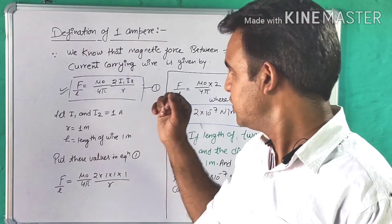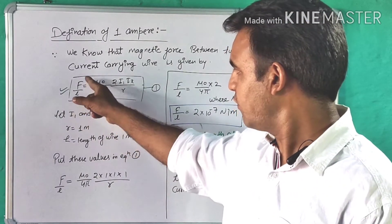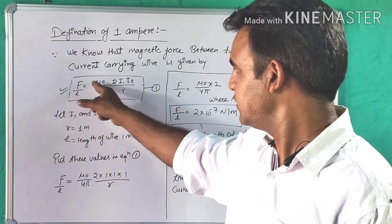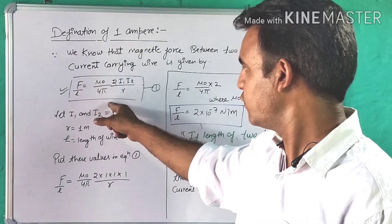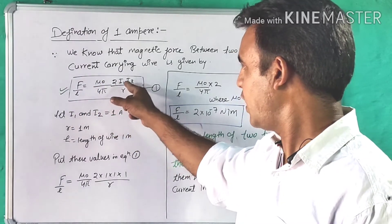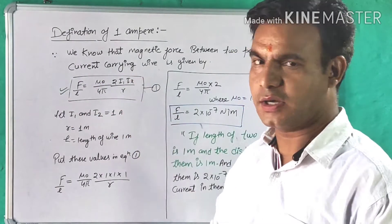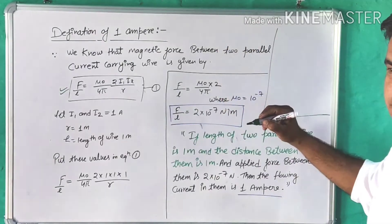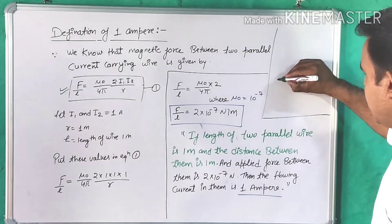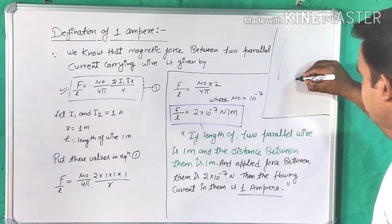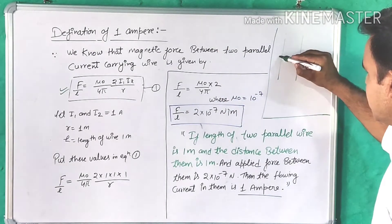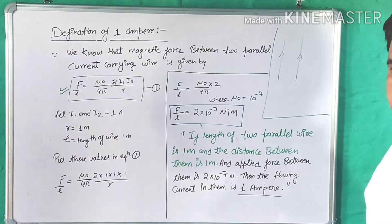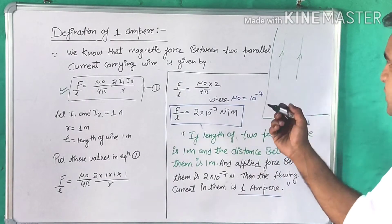The equation for force per unit length is: mu naught upon 4 pi, times 2 I1 I2 upon R. So from the figure, we have 2 conductors — 2 parallel conductors.